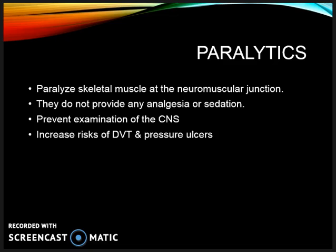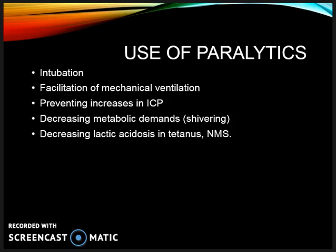Neuromuscular blocking drugs block neuromuscular transmission at the neuromuscular junction, causing paralysis of the affected skeletal muscles. Since the medication paralyzes the patient, be sure to sedate them and treat pain first. As with deep sedation, paralytics prevent a thorough neuro exam. Because these patients are not moving, they are at a higher risk of DVTs and pressure ulcers. Paralytics in the ICU can be used for intubation, to facilitate mechanical ventilation in patients who cannot tolerate the ventilator even with appropriate sedation, for multiple trauma with unstable fractures, or to promote critical gas exchange as they may produce a small increase in lung compliance.